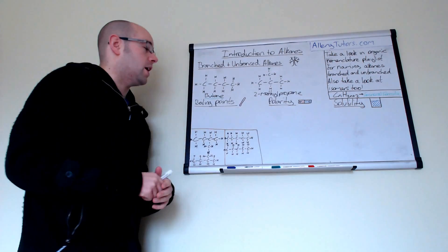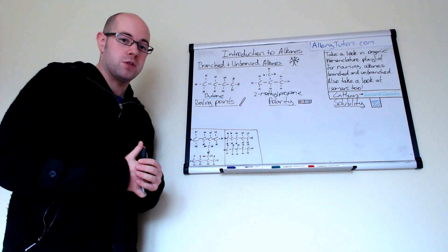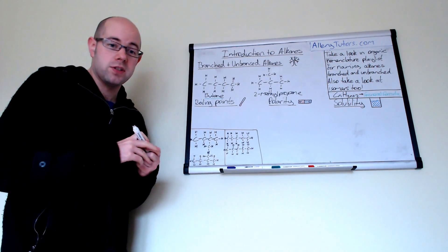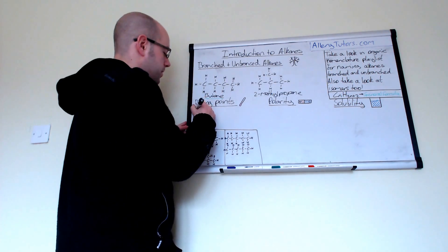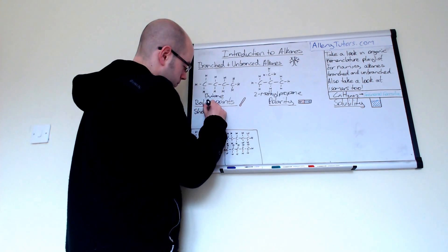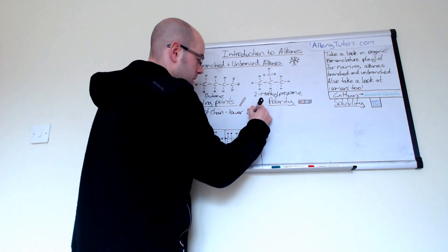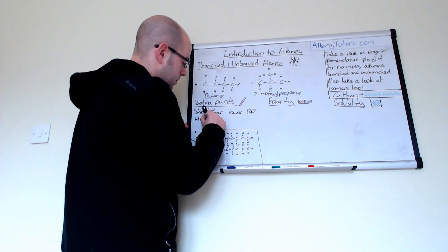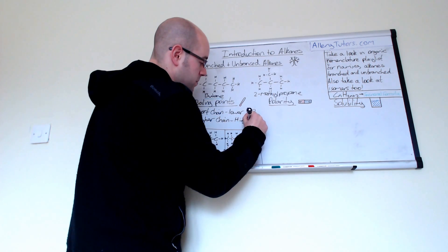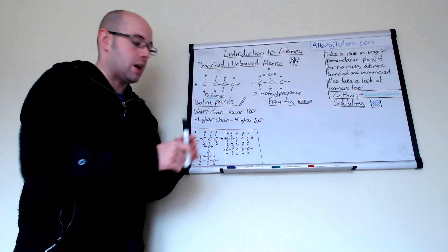So boiling points is quite a useful property because we can actually separate out and help to identify some hydrocarbons when we don't know what they are. So boiling points are governed by intermolecular forces, for example, van der Waals forces. And you can see that actually if we have a short chain hydrocarbon, generally you have lower boiling points. And your higher ones, your higher chain ones will have a higher boiling point. And this is because the longer the hydrocarbon chain is, the more intermolecular forces you get between the molecules.